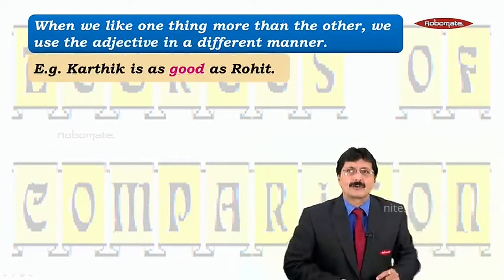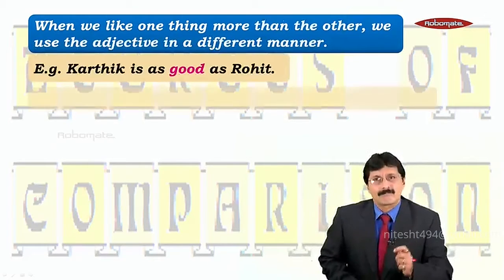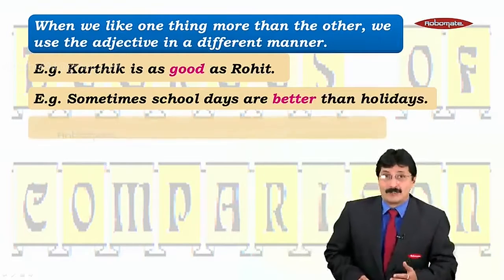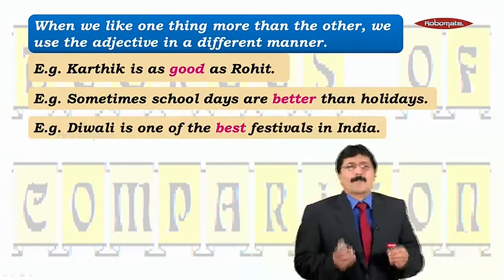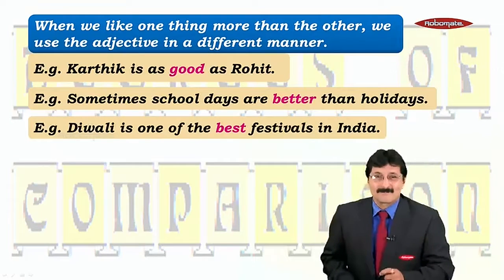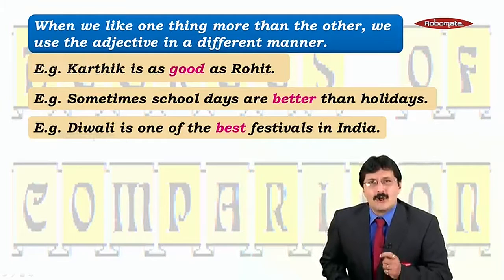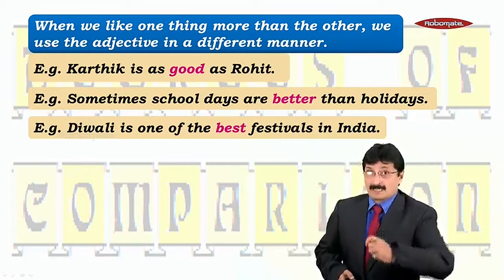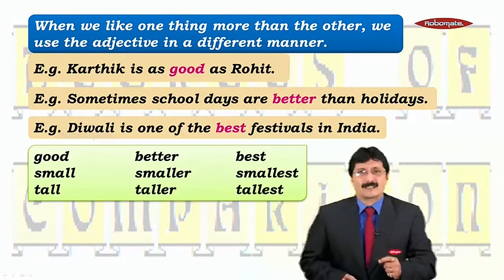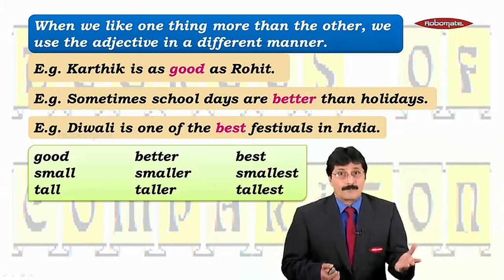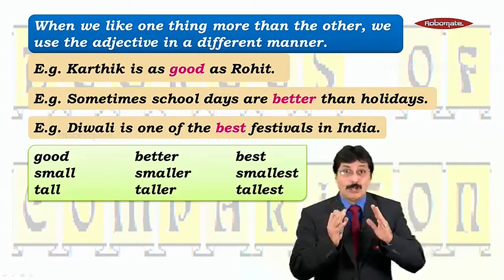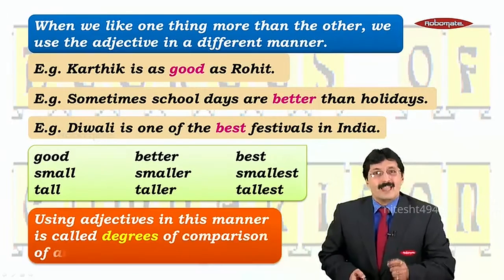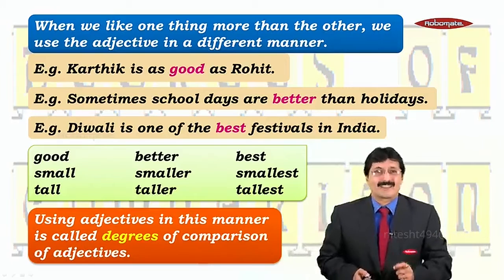Let's take some examples: 'Karthik is as good as Rohit.' 'Sometimes school days are better than holidays.' 'Diwali is one of the best festivals in India.' Look at the way the adjective 'good' has been used — good, better, best. Fantastic! Same way you can have small, smaller, smallest or tall, taller, tallest.